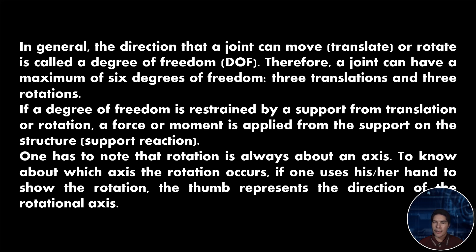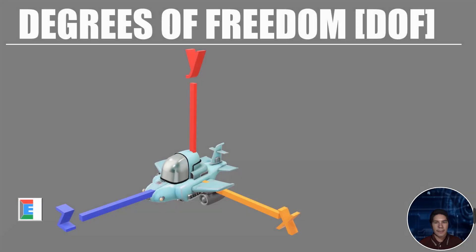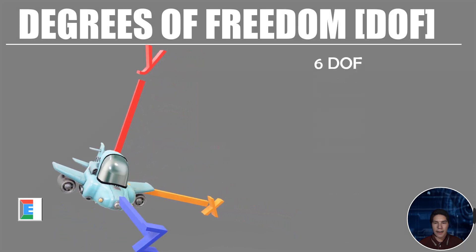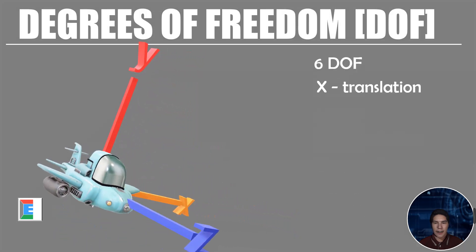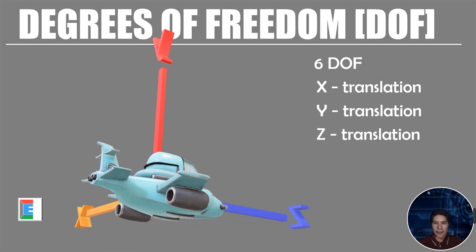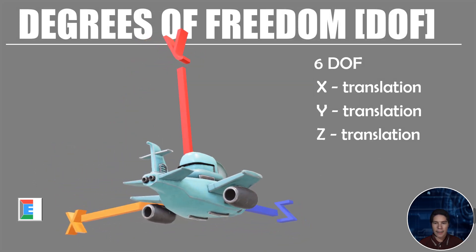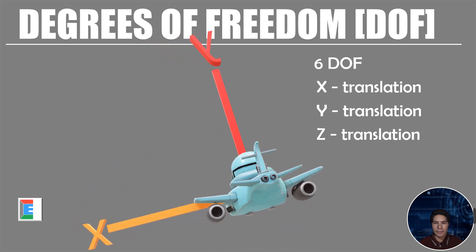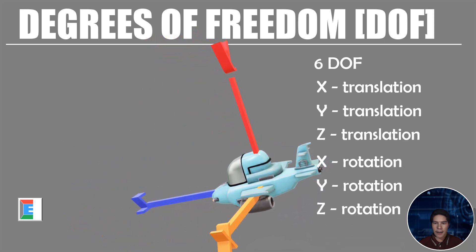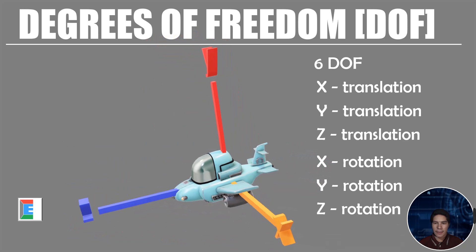So what are the six degrees of freedom? Picture any object — let's say an airplane suspended in space. We have six degrees of freedom: the three translational degrees of freedom in x, y, and z, and the three rotational degrees of freedom also in x, y, and z.